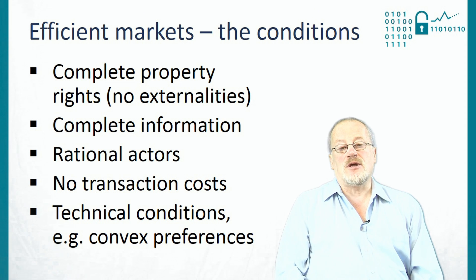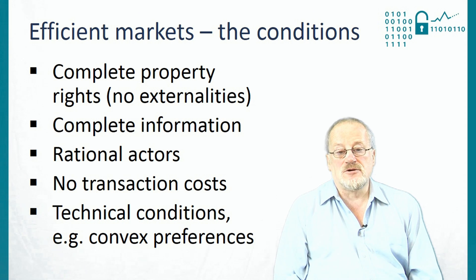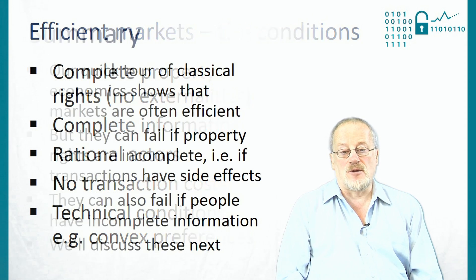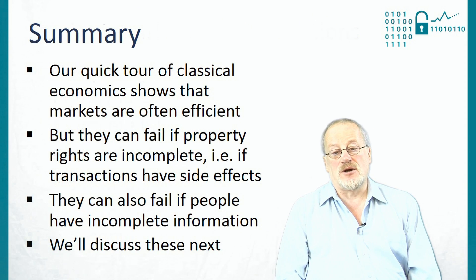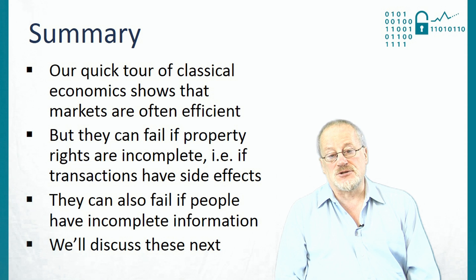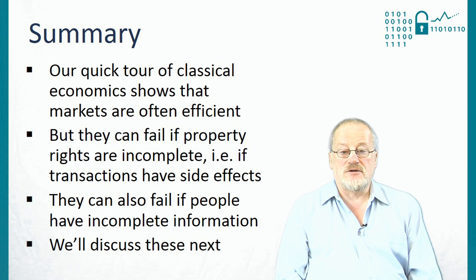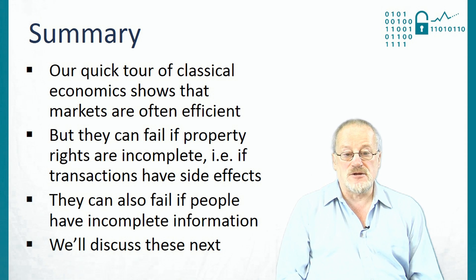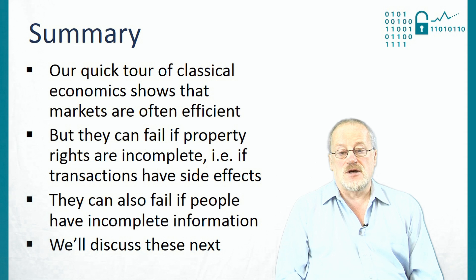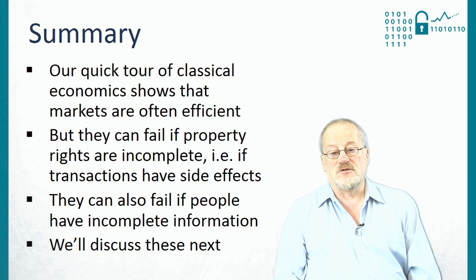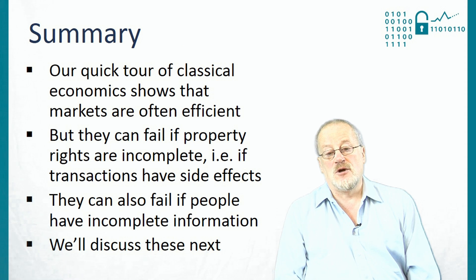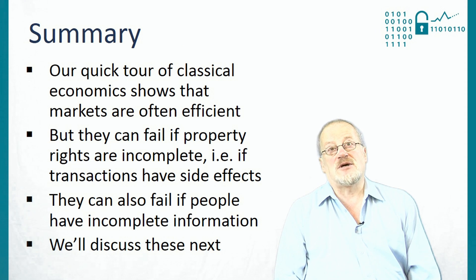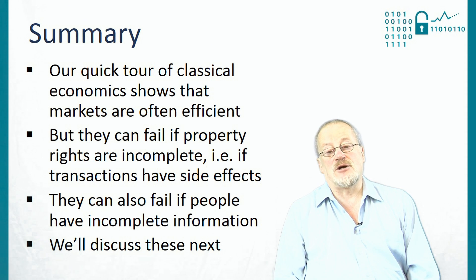In summary, our quick tour of classical economics has shown that markets are often efficient, but they can fail if property rights are incomplete — that is, if transactions have side effects — and they can also fail if people have incomplete information or if people are irrational. We're going to discuss these next.